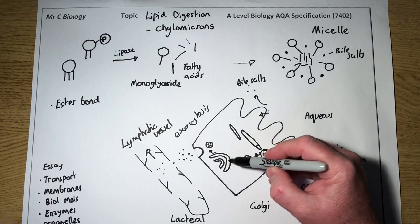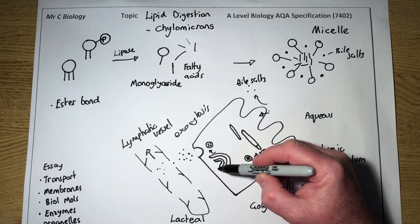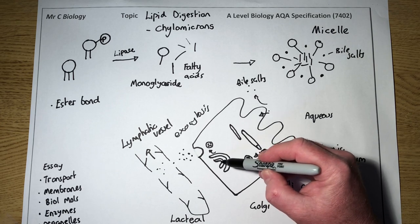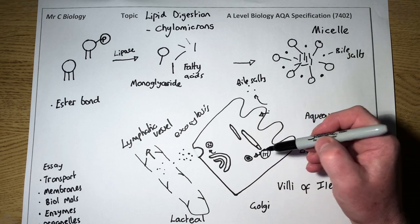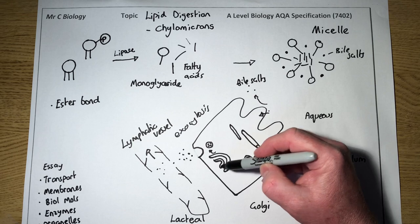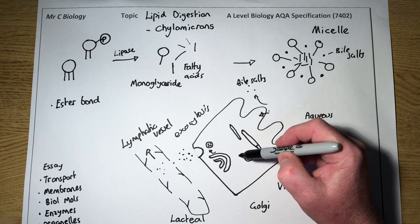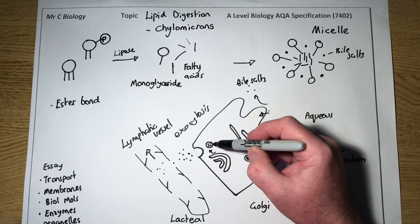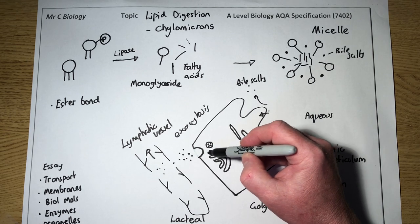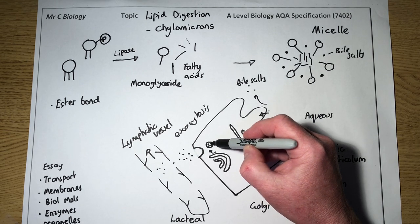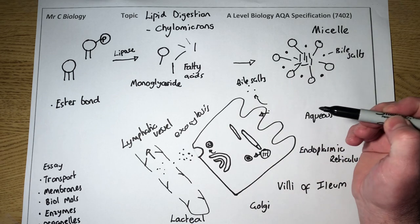In the Golgi, we've got the job of modification, and we would add proteins to the triglycerides to form a structure called a chylomicron. It can also include the addition of cholesterol, and this chylomicron, this triglyceride and protein structure is large and would also need transporting in a vesicle, and there's the chylomicrons inside.